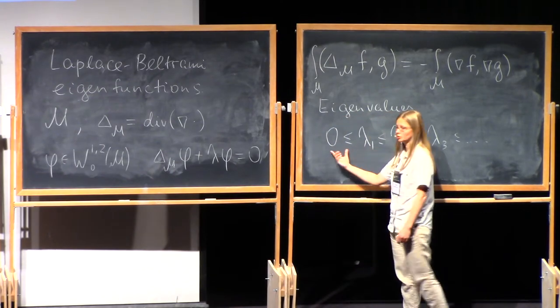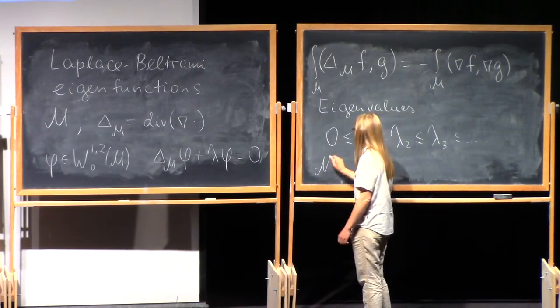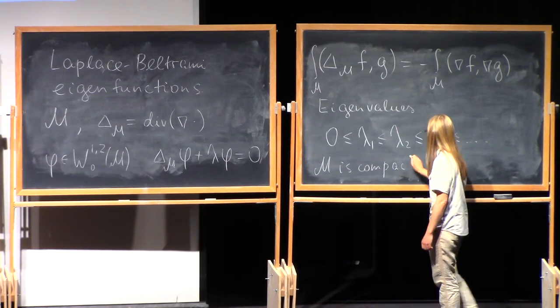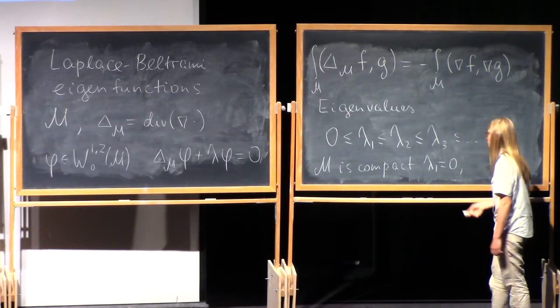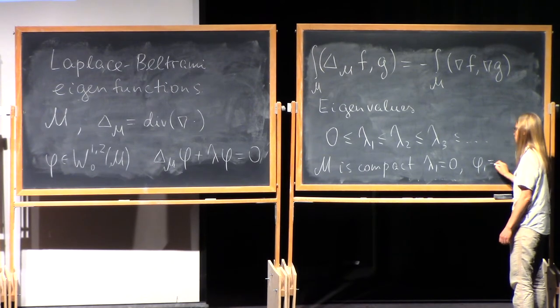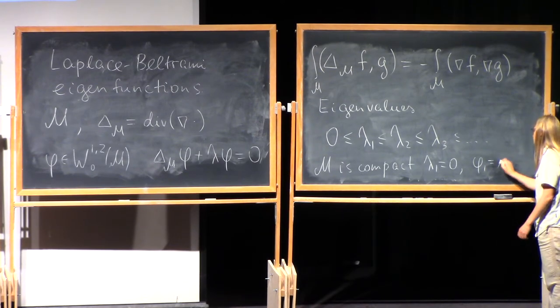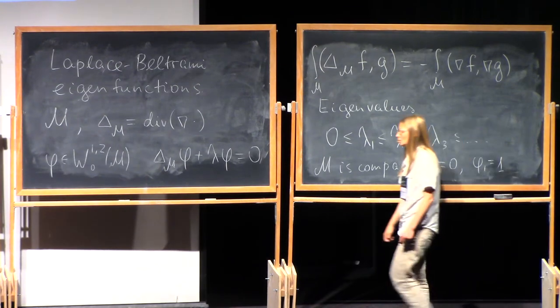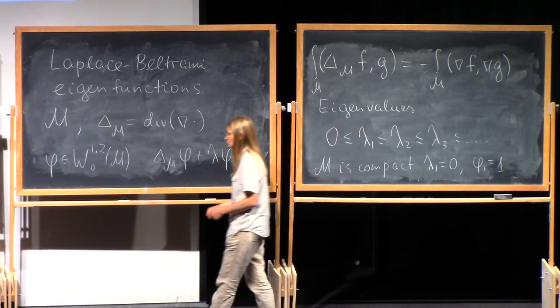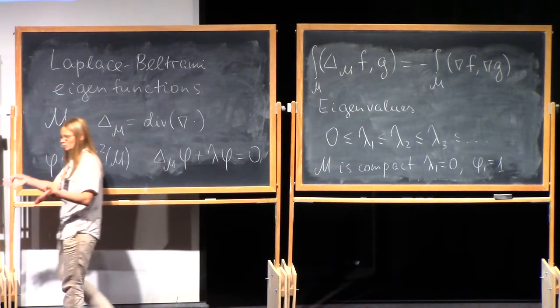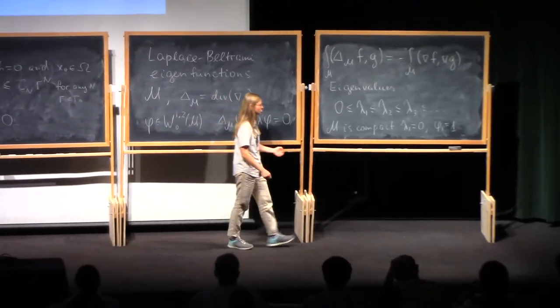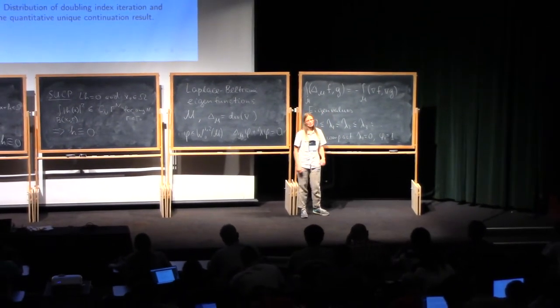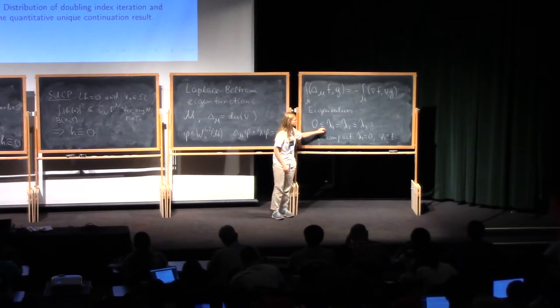On compact manifold M, the first eigenvalue is zero. And the corresponding first eigenfunction is just a constant. You can take function one. It's harmonic there. If we think about domain with a boundary, our first eigenvalue is positive. So we have a strict inequality here.